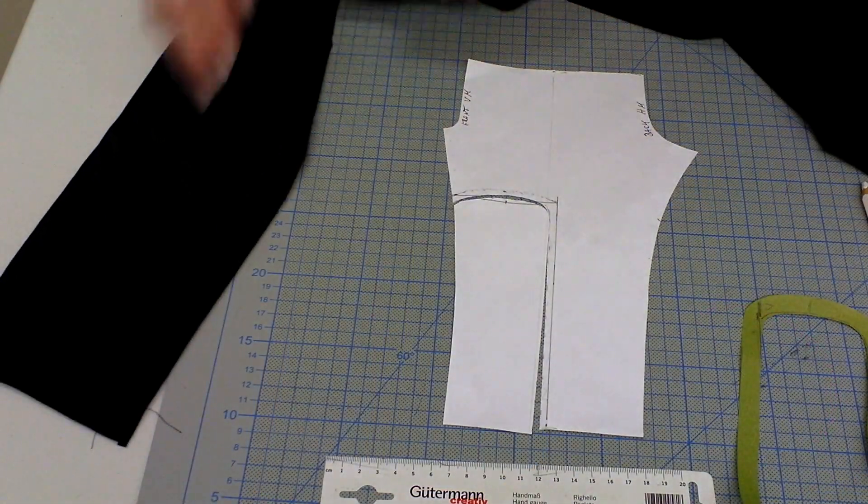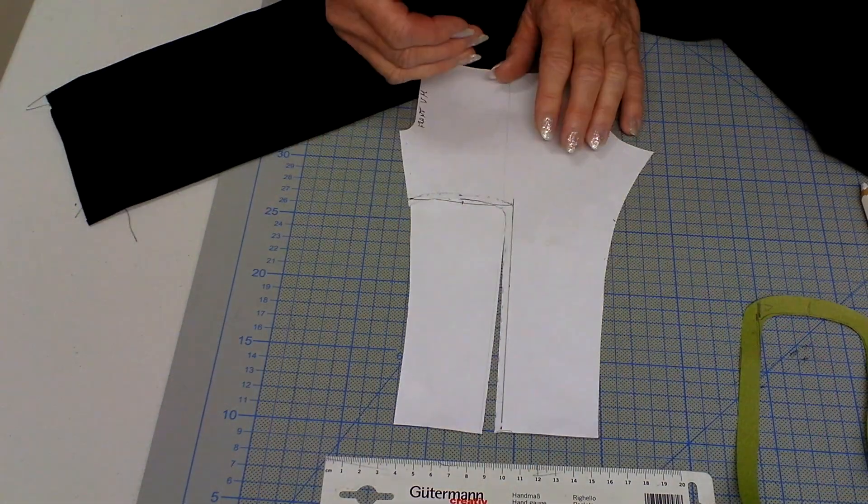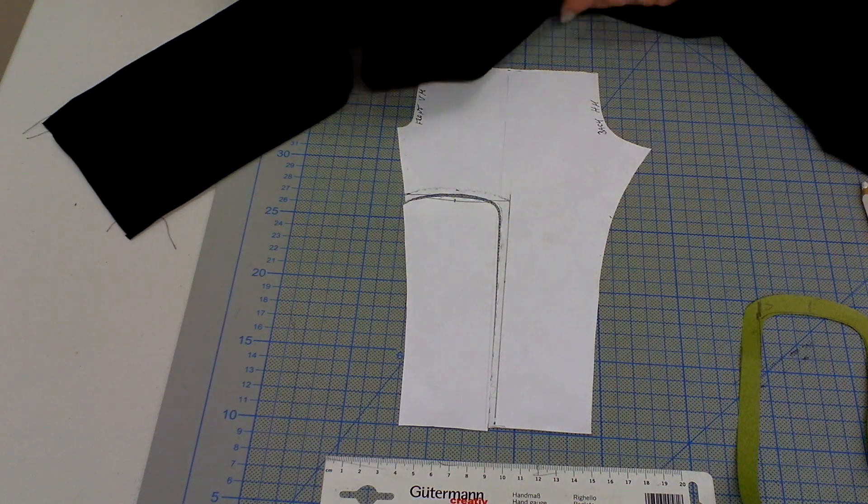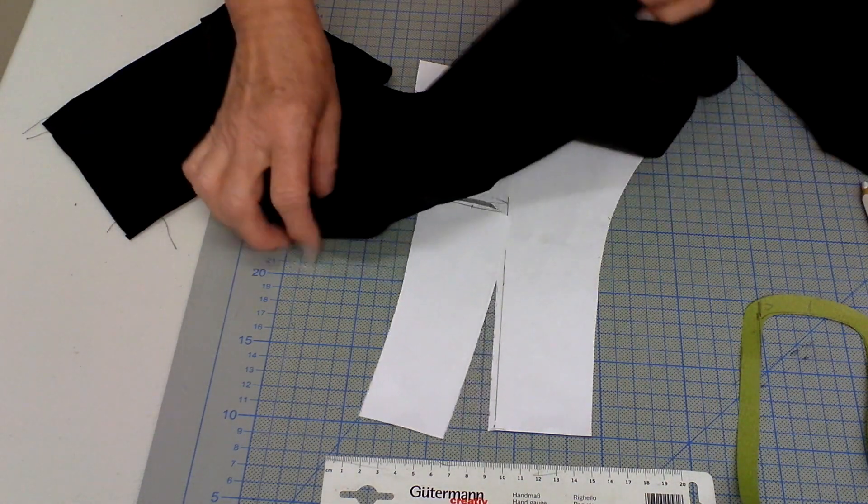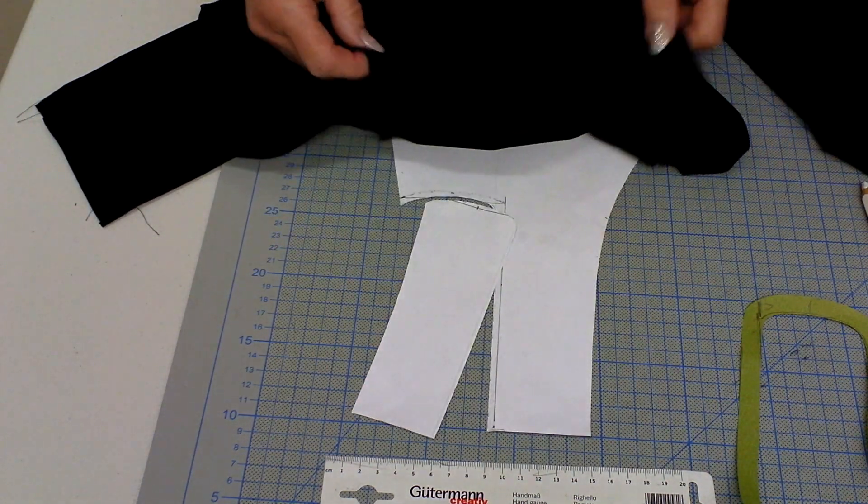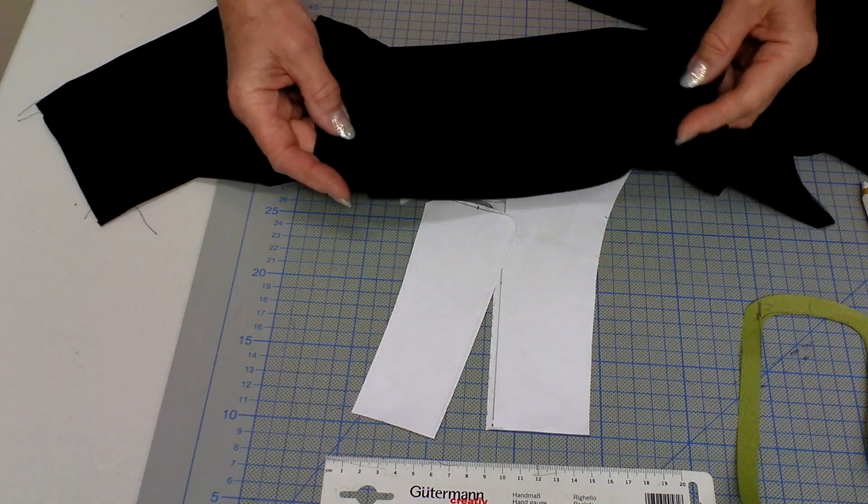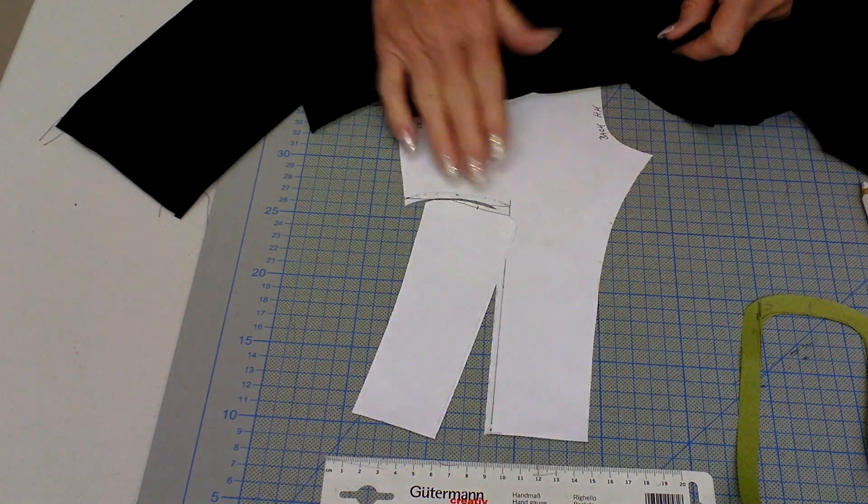I will now mainly explain the sewing to you on the pattern. Reason is I got this black material here and you will hardly not see anything if I show you this and explain it. So here you can see it much better.